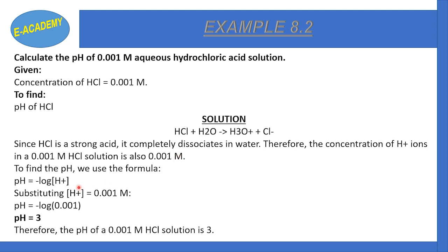Now we will find pH. pH = −log[H⁺]. Substituting H⁺ = 0.001 molar into the equation: pH = −log(0.001 molar).